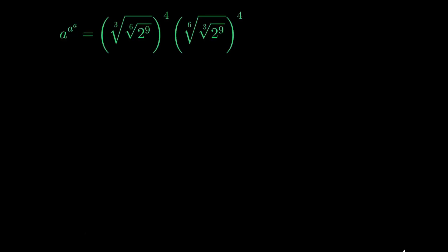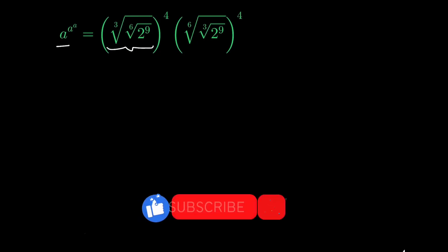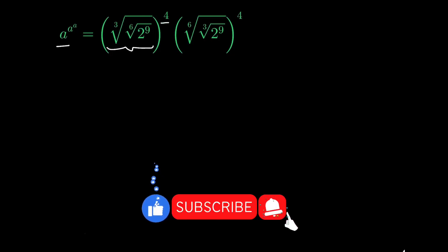Hello everyone. In this video I am going to solve this given exponential equation: a raised to the power a raised to the power a, is equal to this whole nested radical expression raised to the power 4, times this whole nested radical expression raised to the power 4.